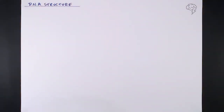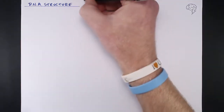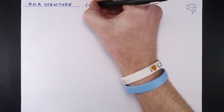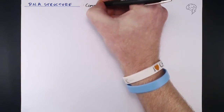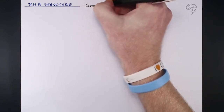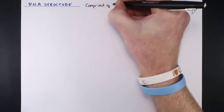DNA is another biological molecule that we need to know the structure of and be able to explain. DNA structure is essentially comprised of three types of molecules.